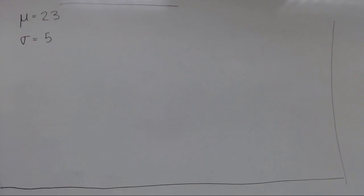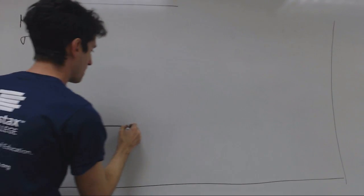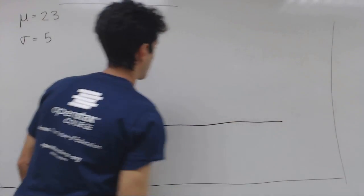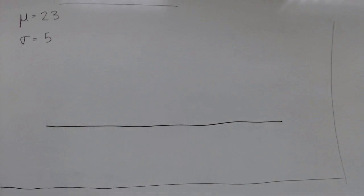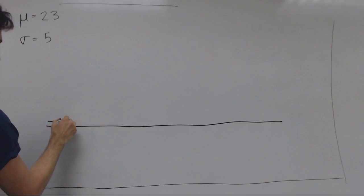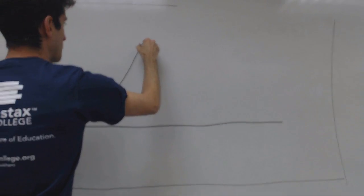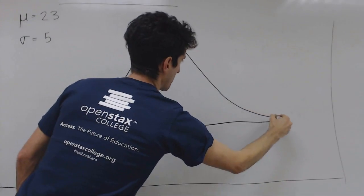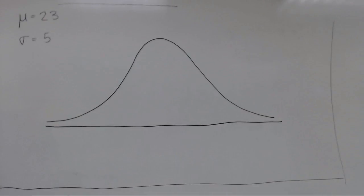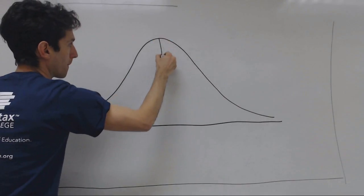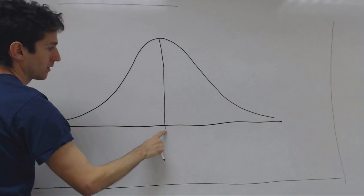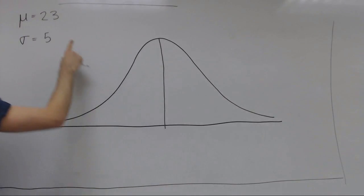Now draw the bell curve. Start with a nice horizontal line and draw the nice bell curve shape over top. Now draw a nice vertical line right down the middle. Label the horizontal axis here with the value of the mean.